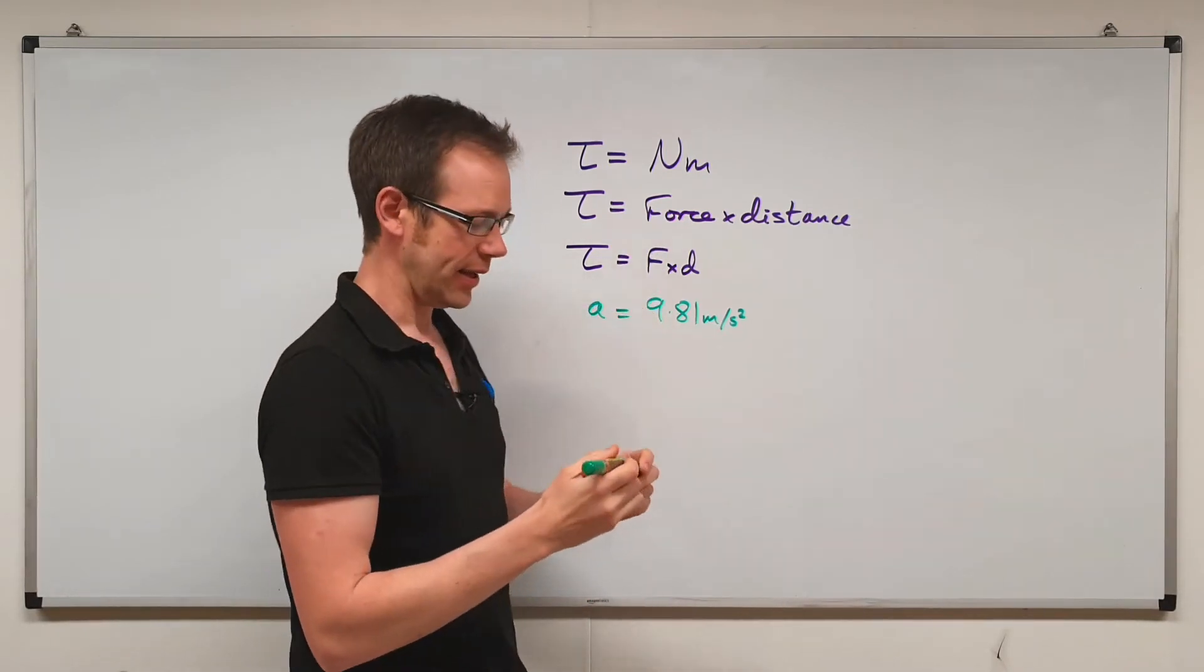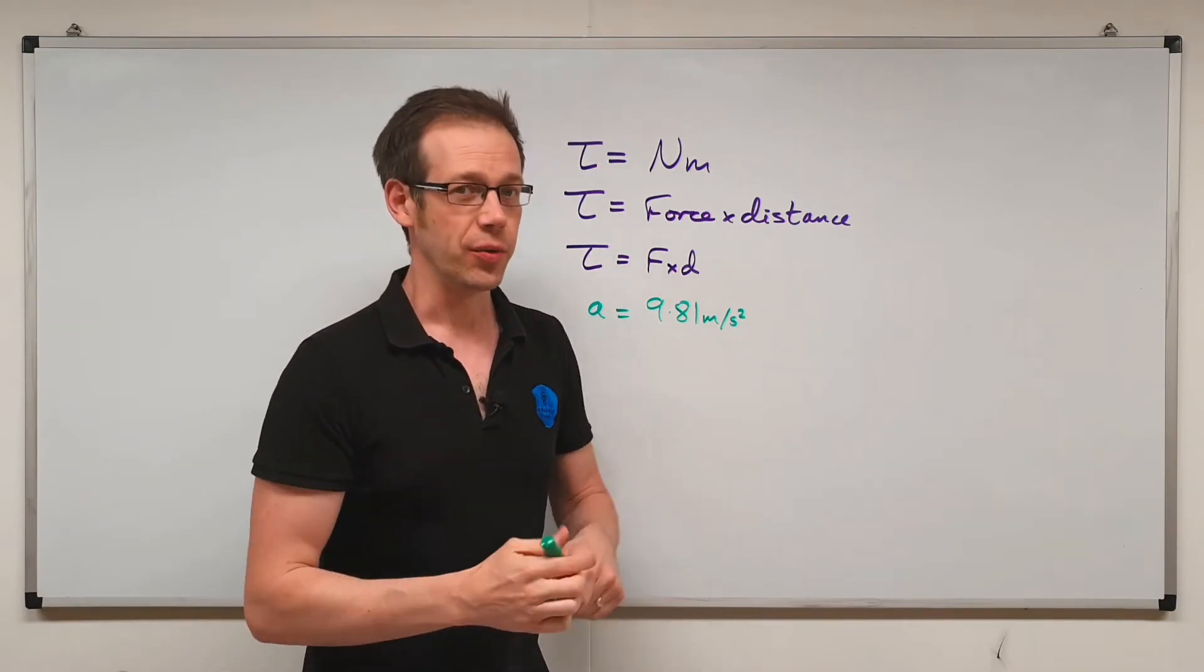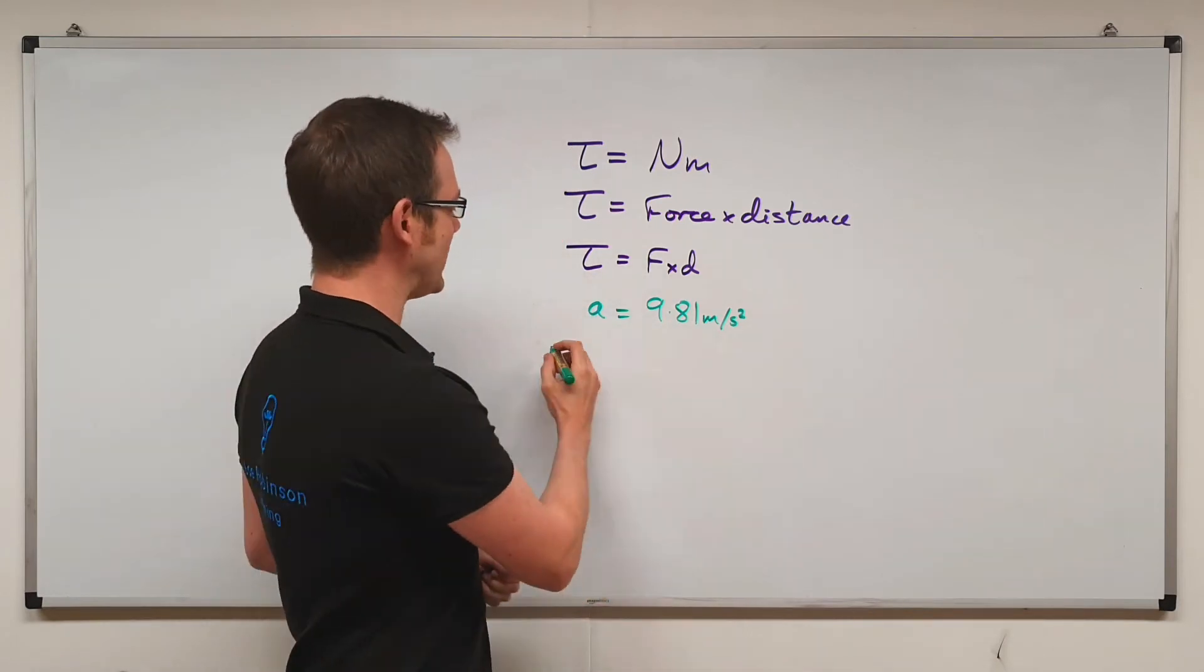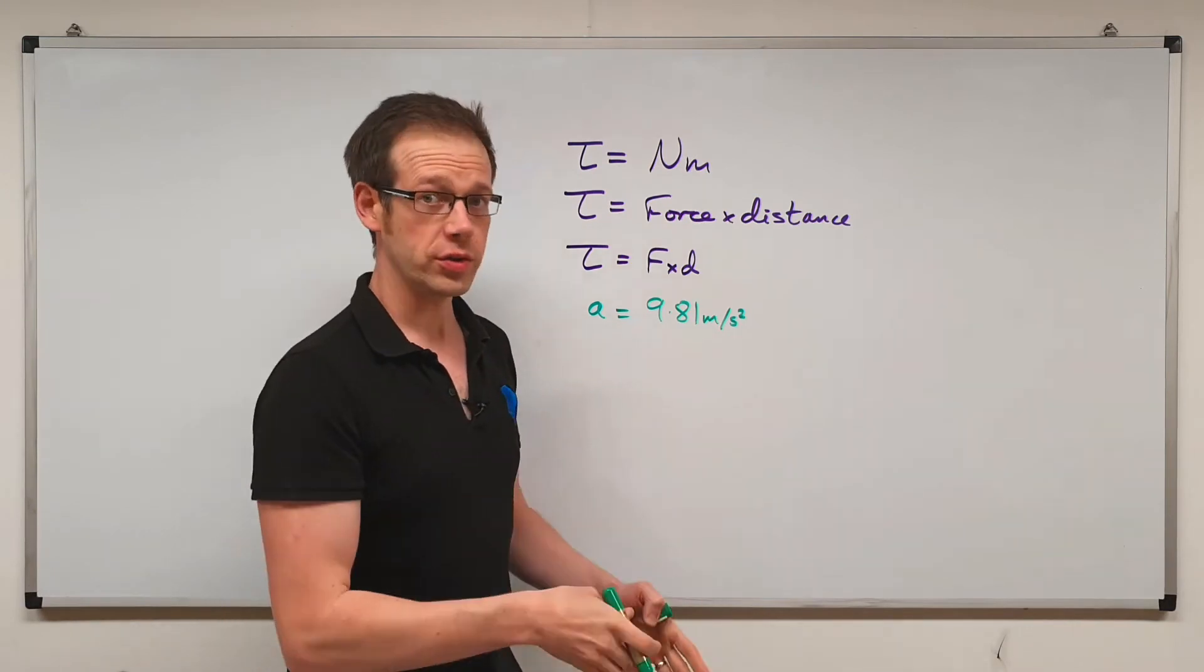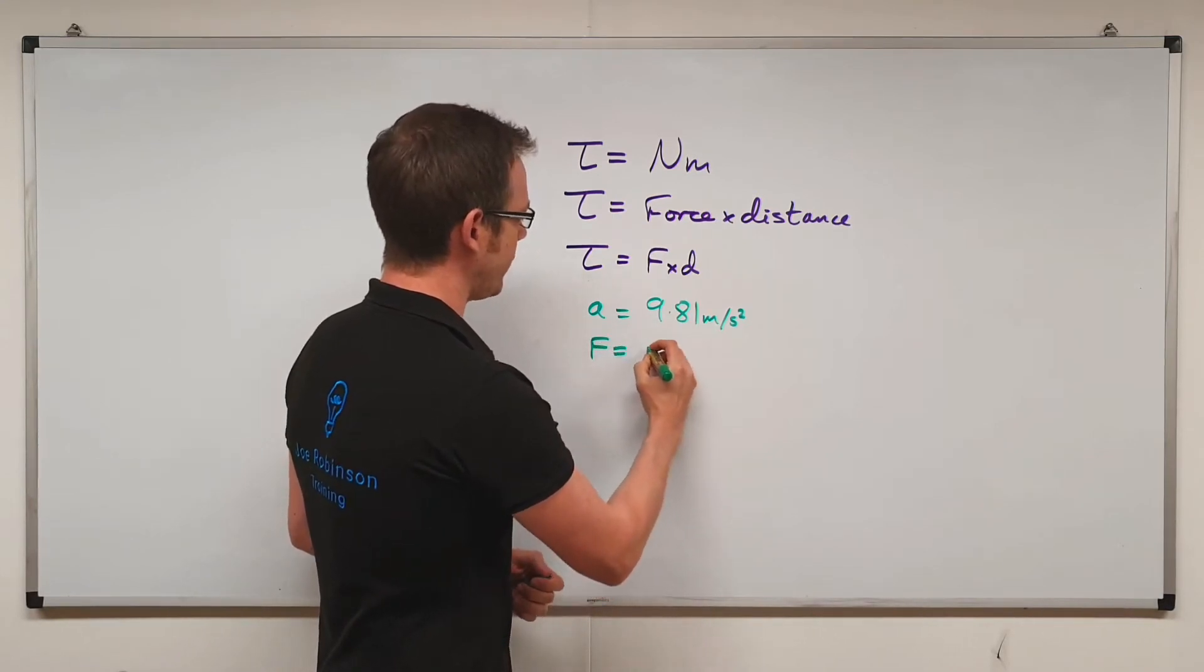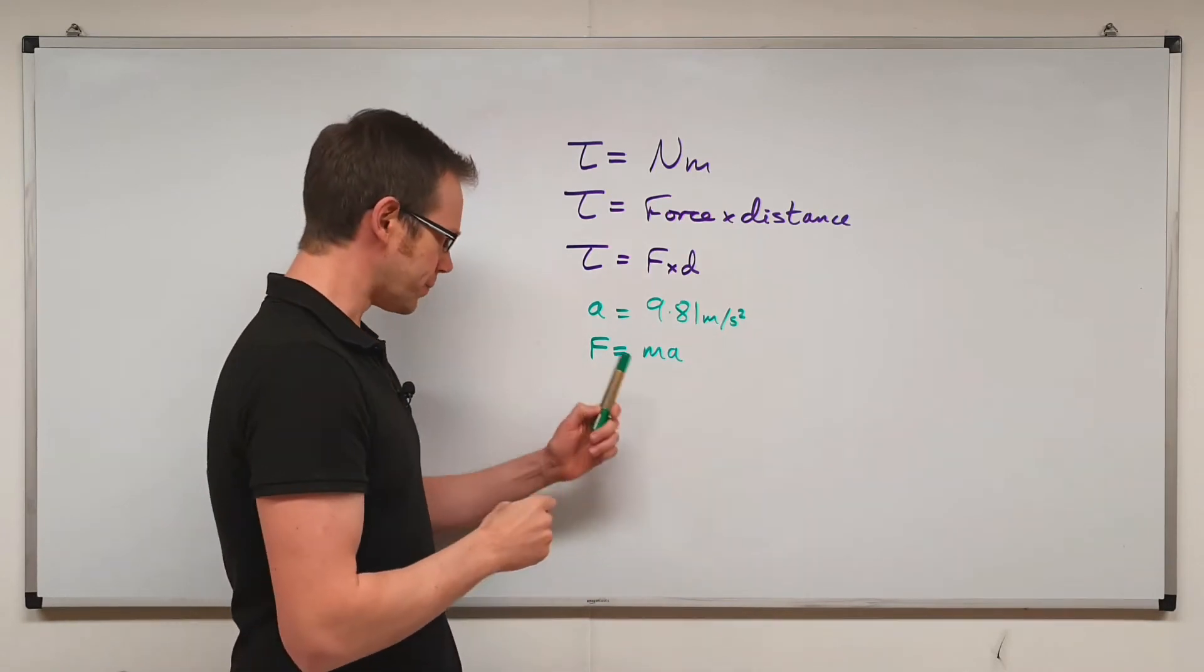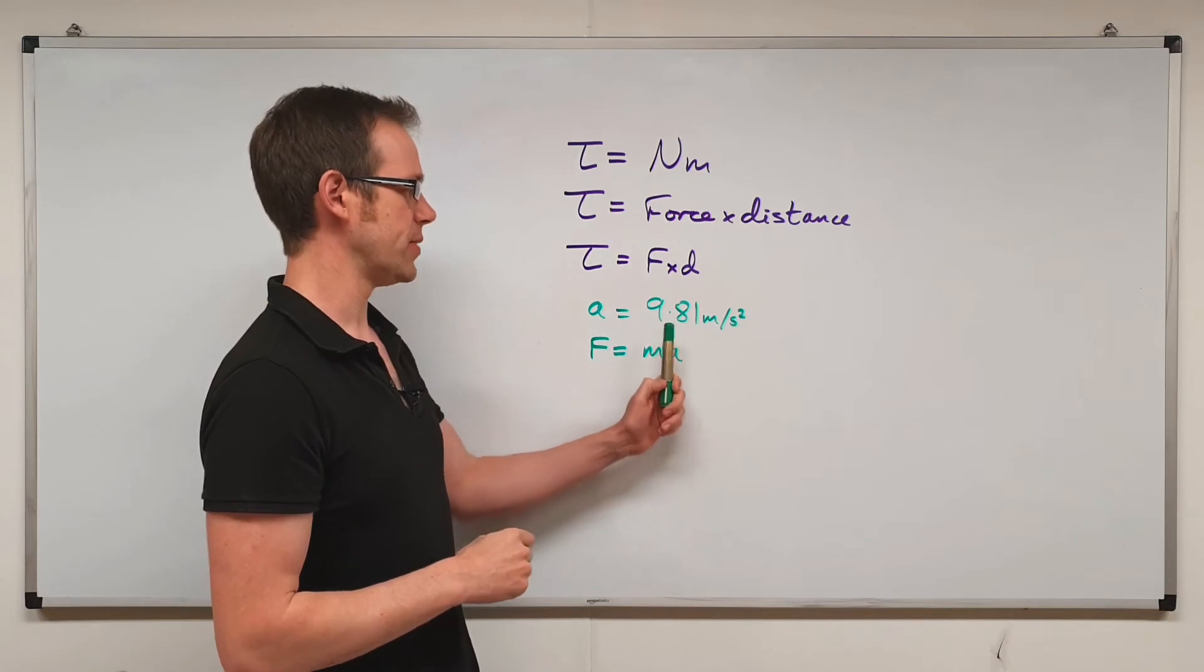So a is the acceleration due to the Earth's gravity. Now that brings us to an interesting extra point, and we're nearly there with the formula, you'll be pleased to hear, that if you want to measure the force that is being created by your mass, you can use this formula. F is equal to M A. That's a very famous formula in physics. F is equal to M A. So force is equal to mass times acceleration.